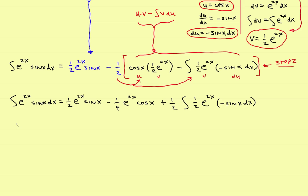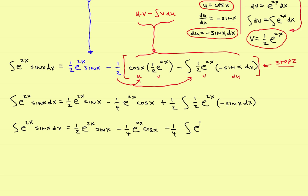Doing a little more cleaning up: the integral of e to the 2x times sine of x dx equals one-half e to the 2x sine x, minus one-fourth e to the 2x cosine of x, then bringing out a negative one-half gives negative one-fourth of the integral of e to the 2x times sine of x dx.